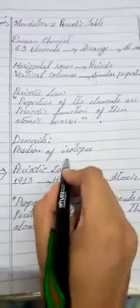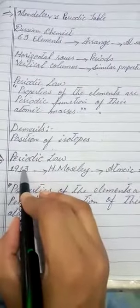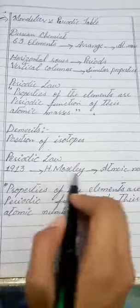Now, we are going to discuss periodic law. In 1913, H. Moseley discovered a new property of elements, atomic number.